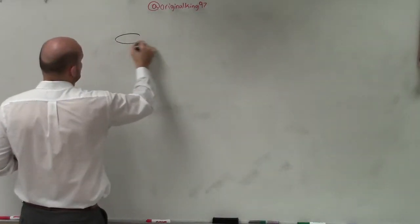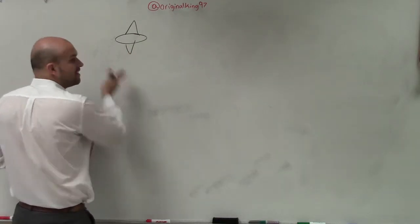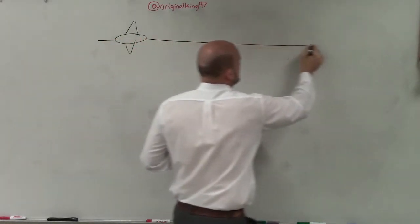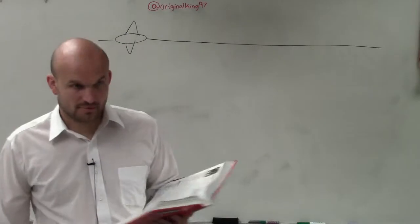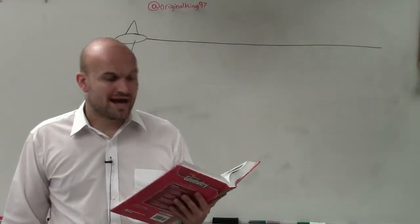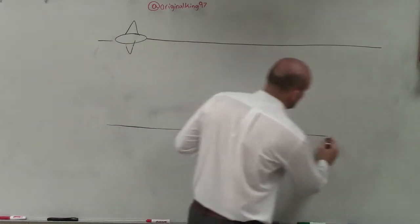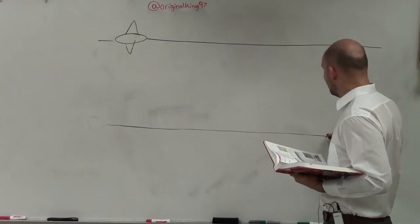They're asking us for an angle of depression, so we need to have a horizontal line. I'm going to draw a picture of a plane flying at a horizontal line. Now, they're asking us for him to land, so there's going to be ground down here. He needs to make an early landing — let's pretend the airport is right here.